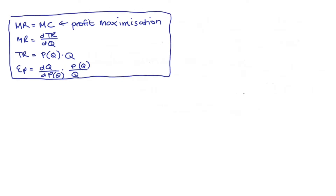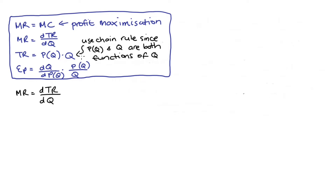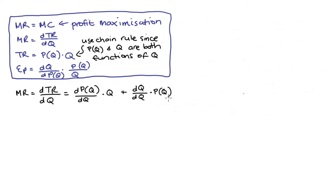So we can start by finding marginal revenue by taking the derivative of total revenue, which we said was price times quantity. Because our total revenue is the multiplication of two variables that themselves are functions of quantity — price is a function of quantity and quantity is a function of itself — we need to use the chain rule. Our derivative comes out as the derivative of price with respect to quantity multiplied by the quantity variable, plus the derivative of quantity with respect to quantity times the price variable. The derivative of quantity with respect to itself is just one, so we're left with marginal revenue equals dP/dQ times Q plus price.